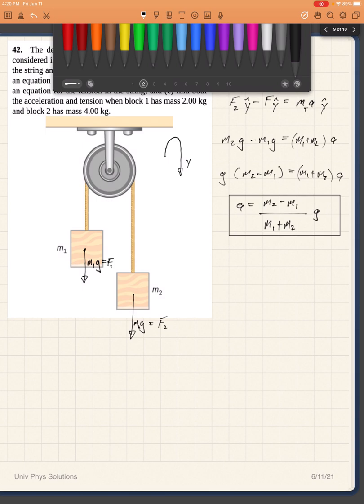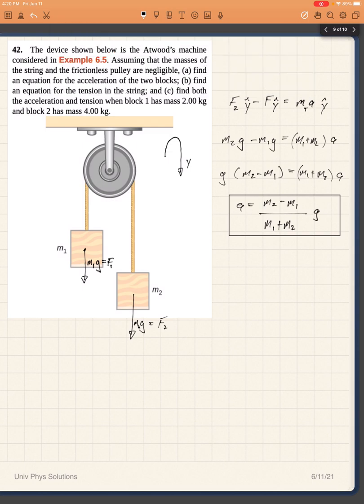Now for part B which asks to find the tension, I can look just at one of the masses as a system. The reason being is that tension will be the same all along the string. So tension here is equal to the tension in this part of the rope or this part of the rope, tension's the same all throughout the rope.